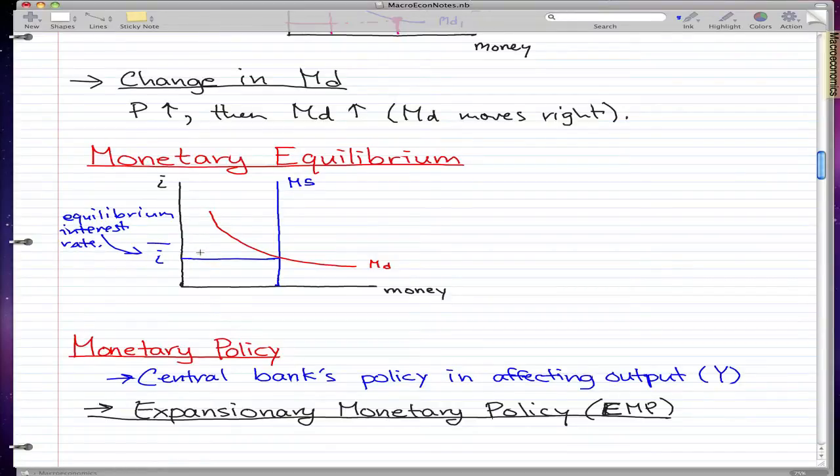So you know that this intersection is the equilibrium interest rate. On the horizontal axis, we call this money-bar. Money-bar is, as you can guess, the equilibrium money.